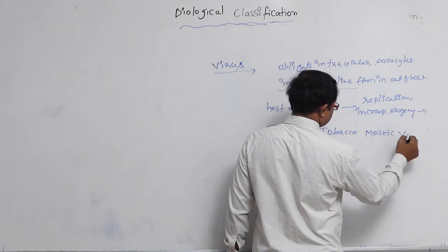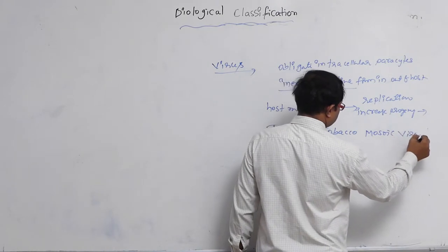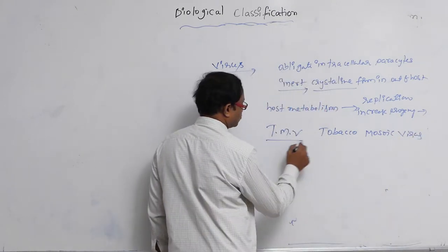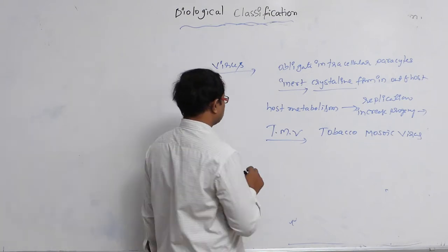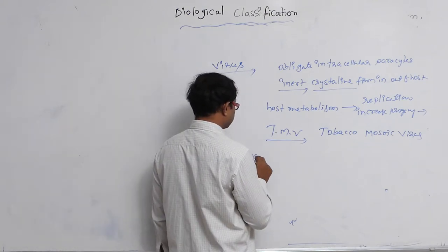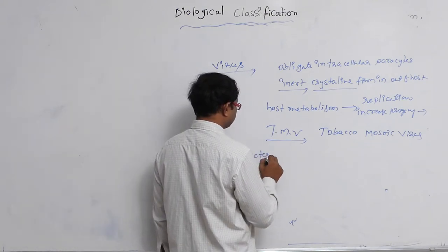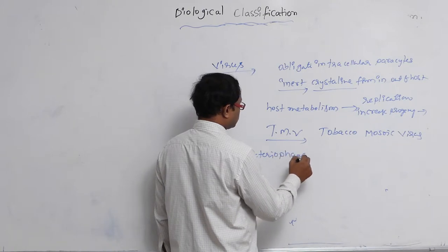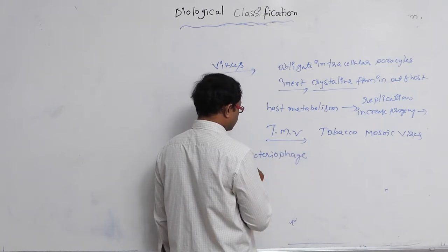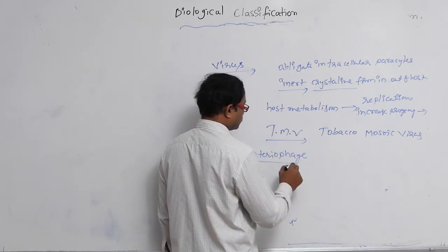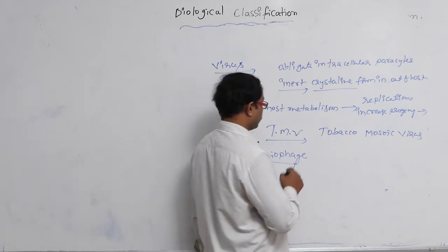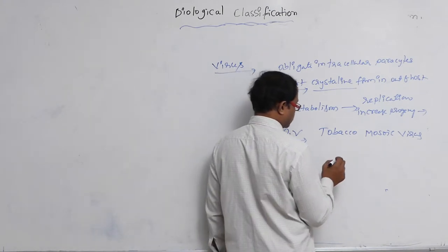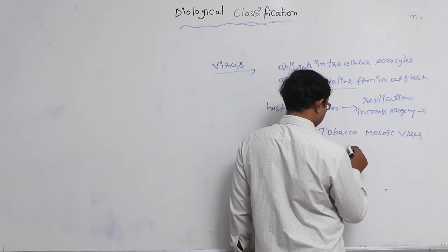TMV causes mosaic disease in tobacco. That's why it is known as TMV virus. After TMV, the next is bacteriophage. Bacteriophage means the virus that attacks bacteria. They are known as bacteriophages. Let's look at the bacteriophage structure.